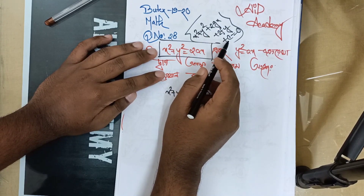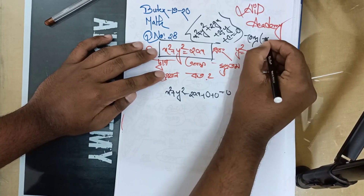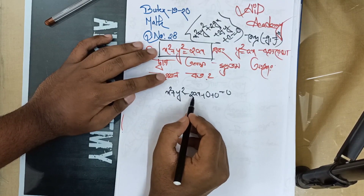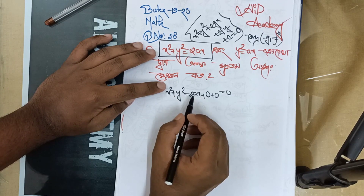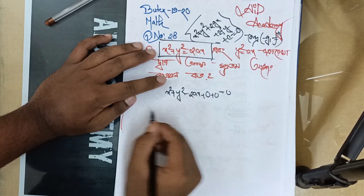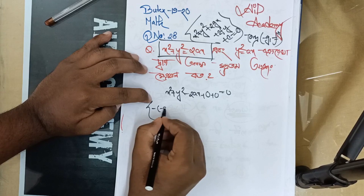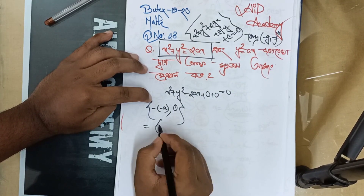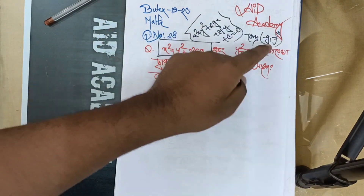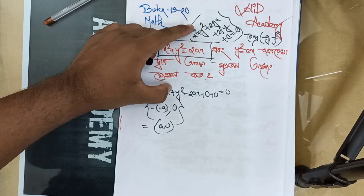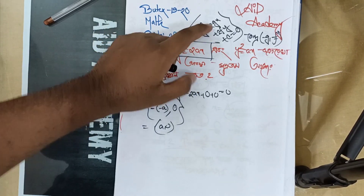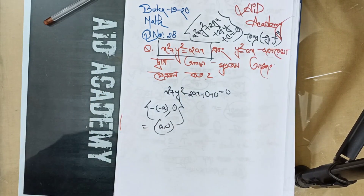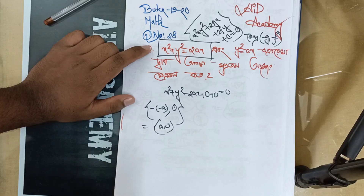So we have x squared plus y squared plus 2gx plus 2fy plus c equals 0, and we have x squared plus y squared minus g, minus f. So here we have x squared plus y squared minus 2ax, so x squared minus c equals 0.